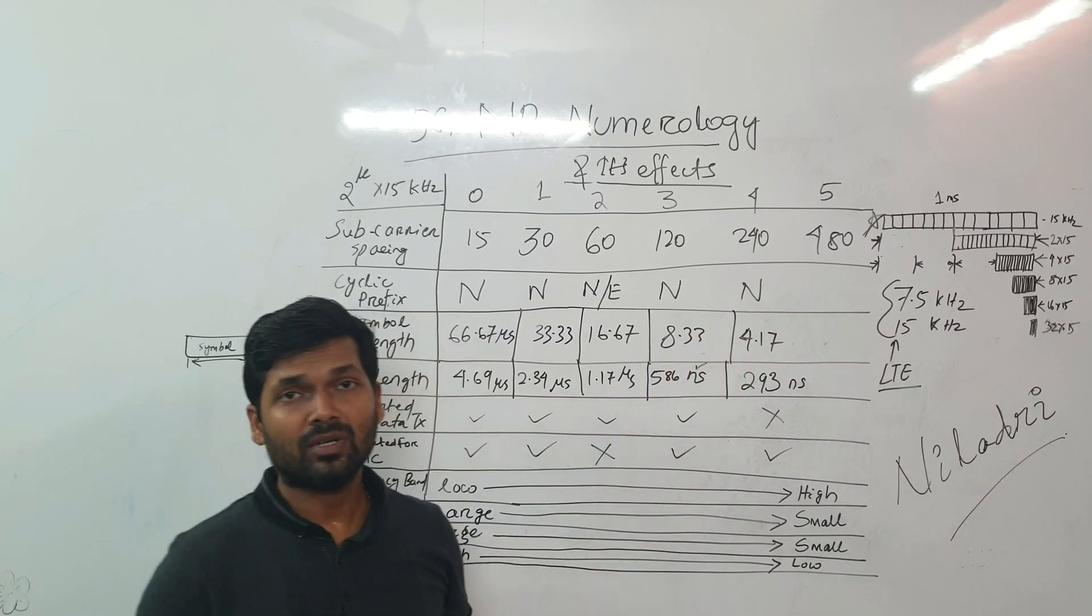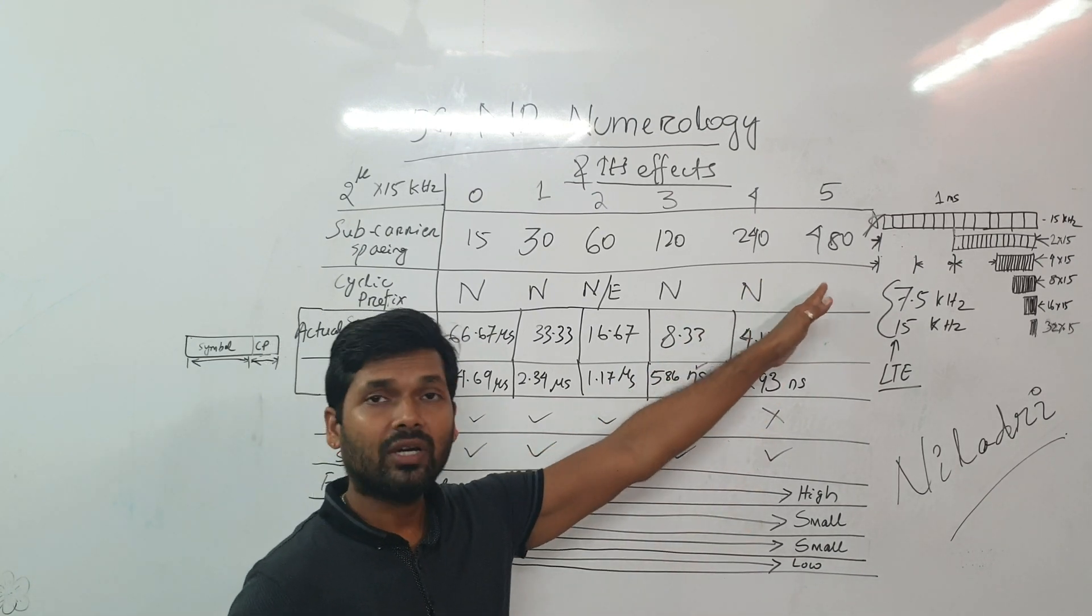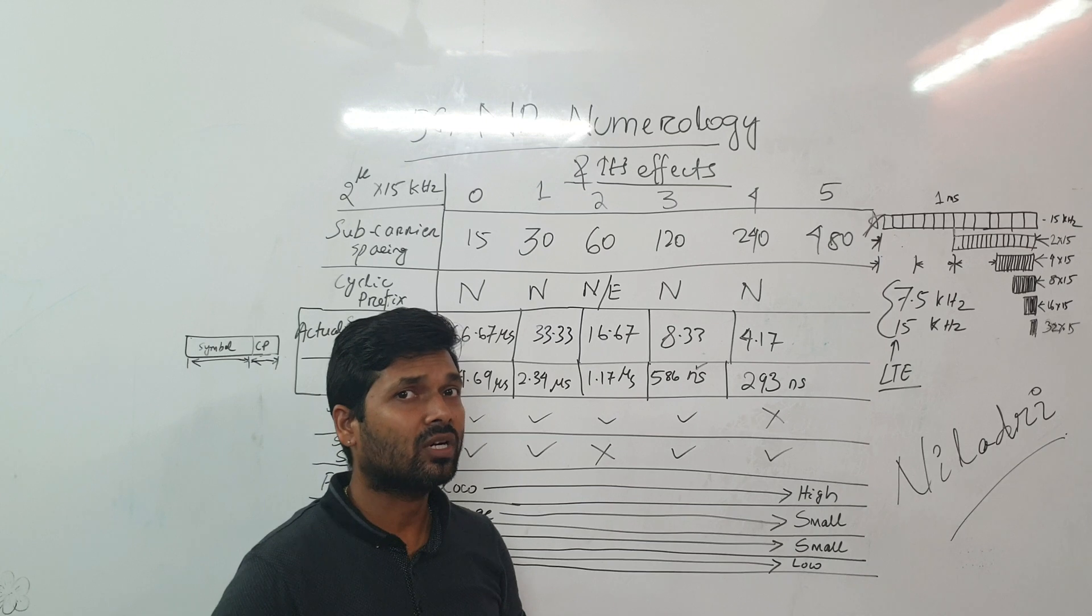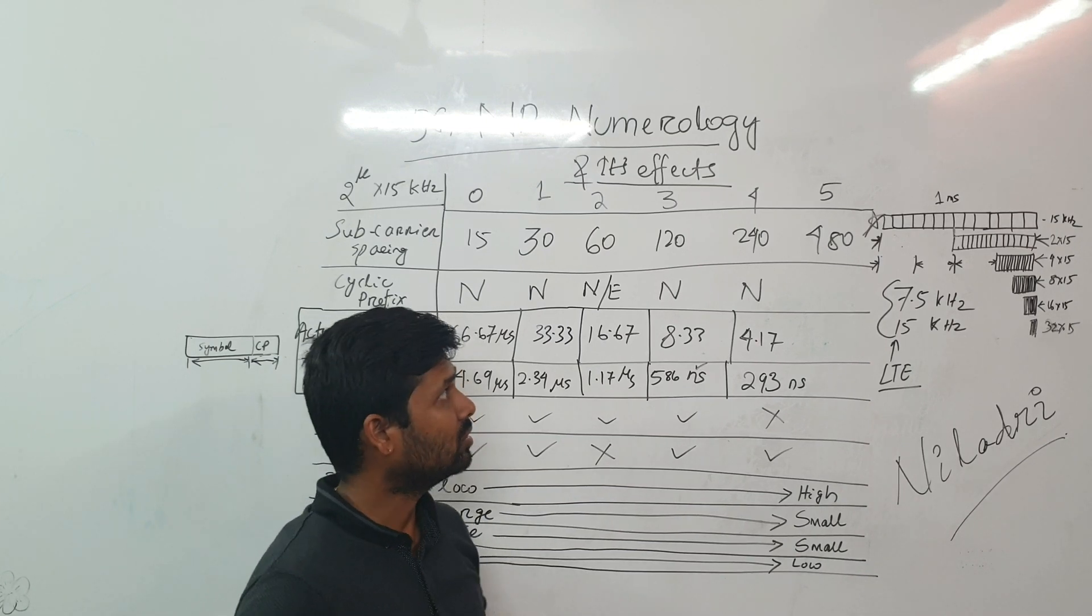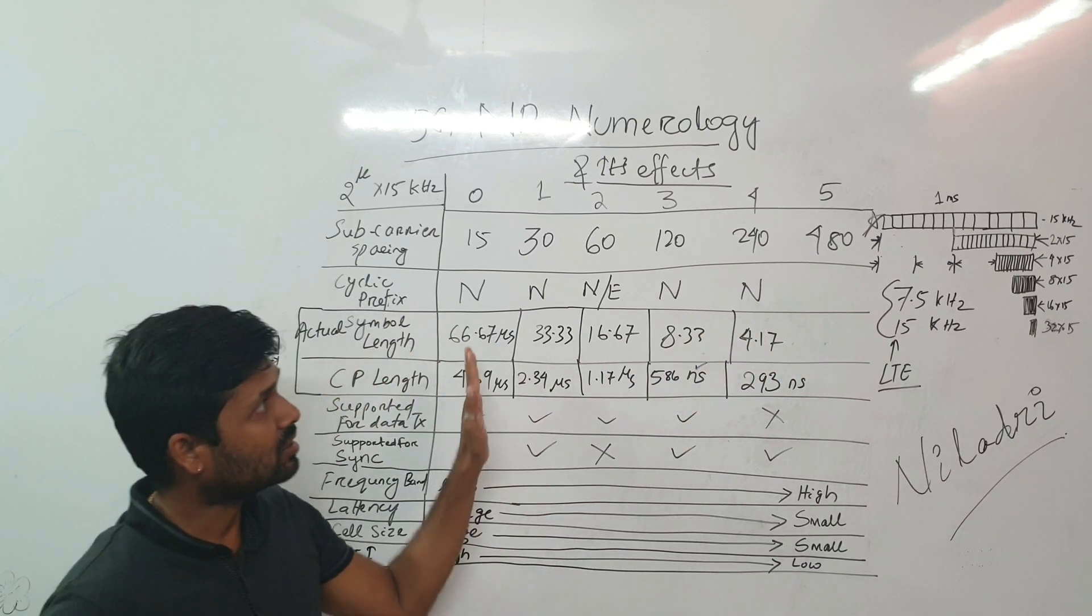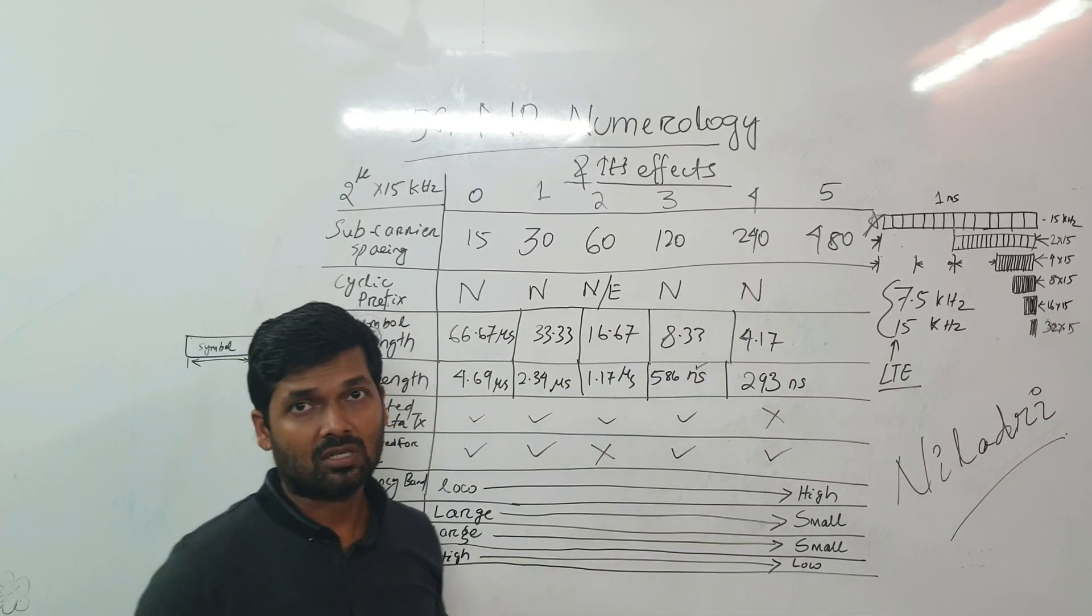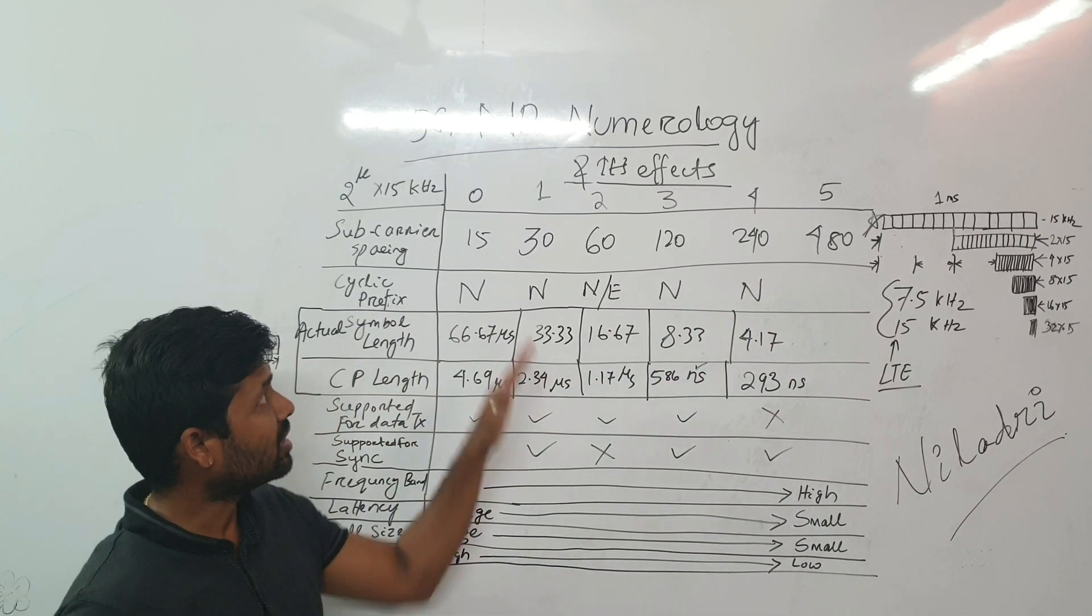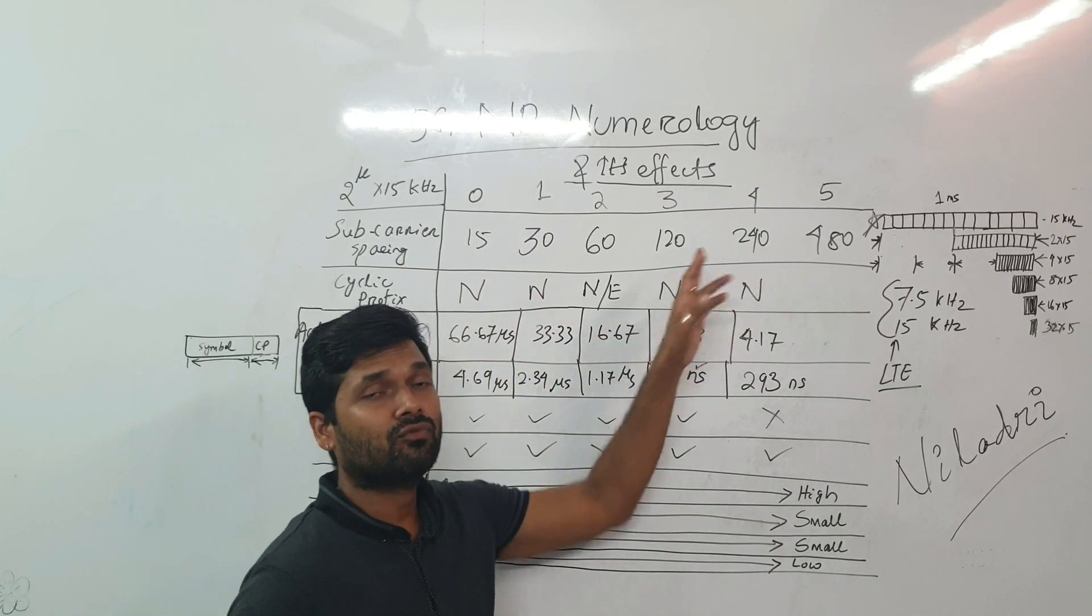In some of the documents of 3GPP we will be getting the 480 kilohertz subcarrier spacing also. But we will not discuss about 480 today. We will be discussing till 240 kilohertz subcarrier, starting from 15 kilohertz till 240.